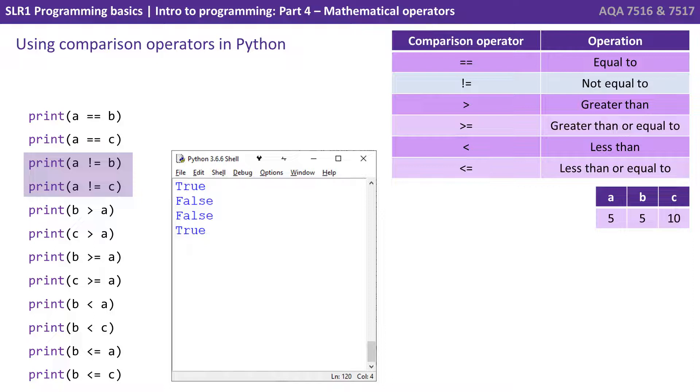Similarly if we flip that and say a not equal to b, and a not equal to c, we get false, and true. b is greater than a is false, whereas c is greater than a is true. b is greater or equals to a is true, and c is greater or equals to a is also true. B is less than A is false, whereas B is less than C is true. B is less than or equals to A is true, and B is less than or equals to C is true.